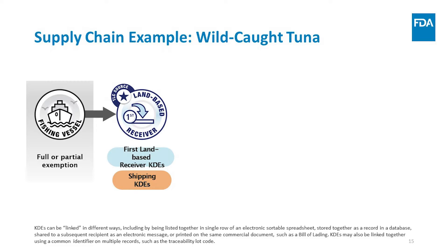There are only a few activities in the supply chain during which a TLC can be assigned: when you perform the first land-based receiving of a food obtained from a fishing vessel, as shown in the example; when you initially pack a raw agricultural commodity; or when you transform a food on the food traceability list. The TLC must be linked in the firm's records with the key data elements associated with that lot of food.